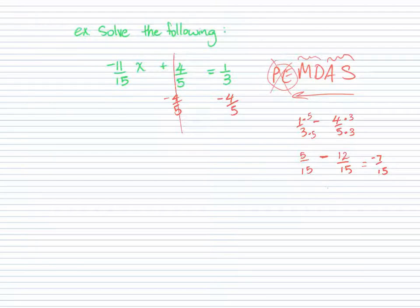Alright, that was just scrap work. Now we are ready to keep going with this question. And we get negative eleven over fifteen x is equal to negative seven over fifteen. So just as a reminder, we got that negative seven over fifteen from doing this subtraction right here. That was the answer for that. Okay, so now that we've done that, it's time to isolate the x.